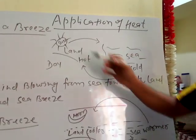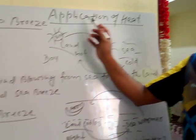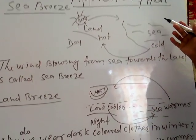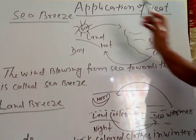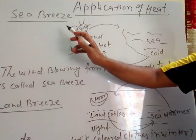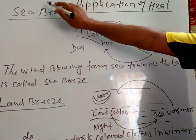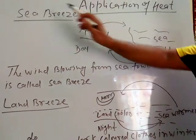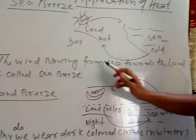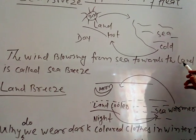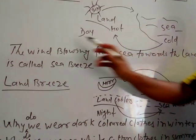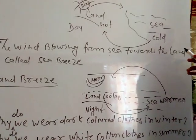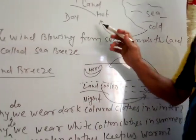In this part of the heat chapter, we will explain the application of heat in our daily life and how heat helps us. We might have heard the terms sea breeze and land breeze. Sea breeze means the cool air which transfers from the sea to the land. The wind blowing from the sea towards the land during daytime is called sea breeze.